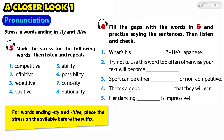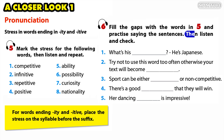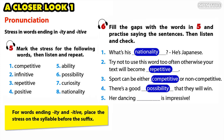Pronunciation, Activity 6: Fill the gaps with the words in Activity 5 and practice saying the sentences, then listen and check. One: What's his nationality? He's Japanese. Two: Try not to use this word too often; otherwise, your text will become repetitive. Three: Sport can be either competitive or non-competitive. Four: There's a good possibility that they will win. Five: Her dancing ability is impressive.